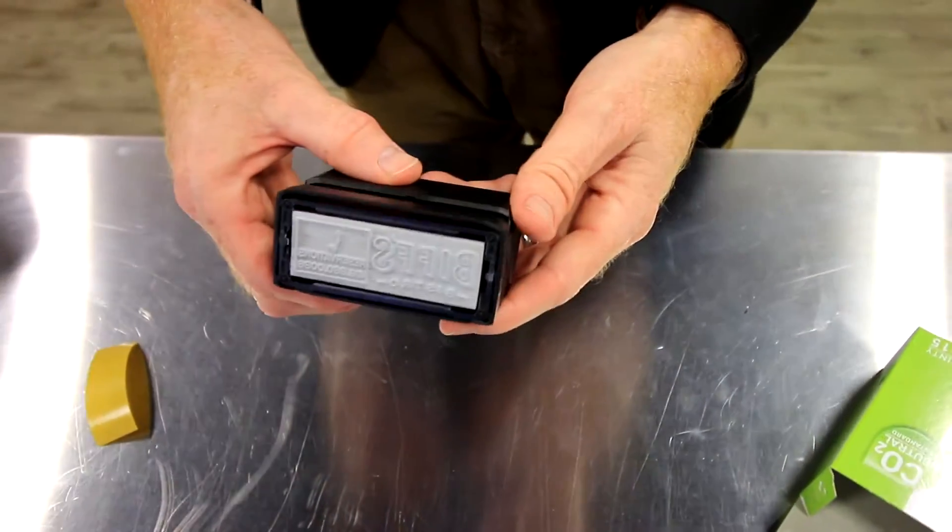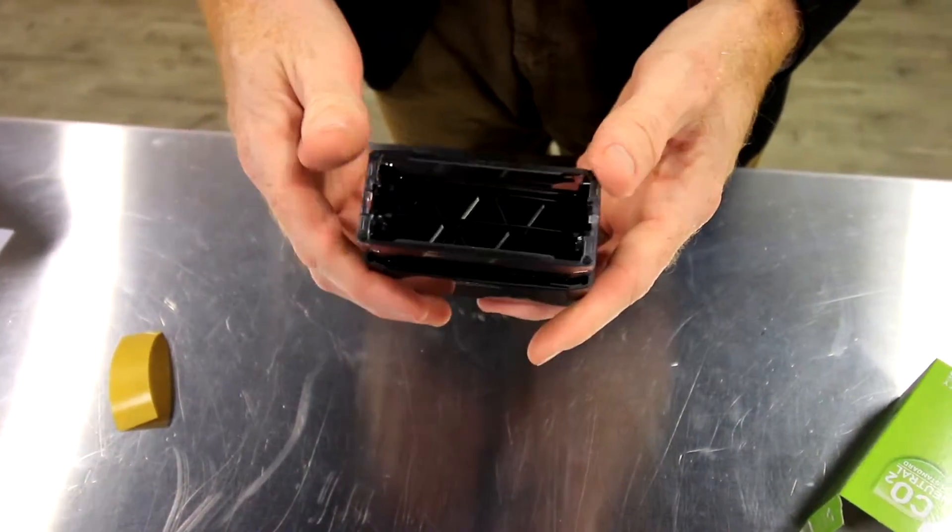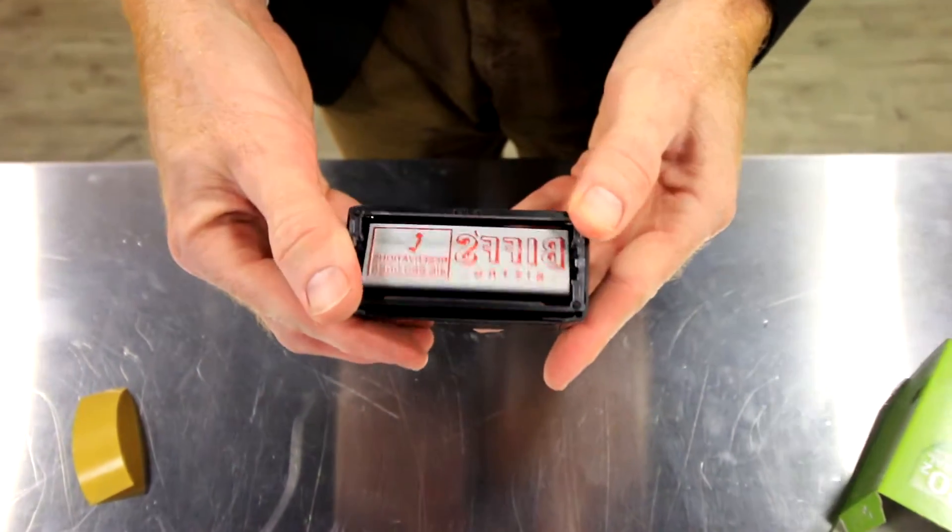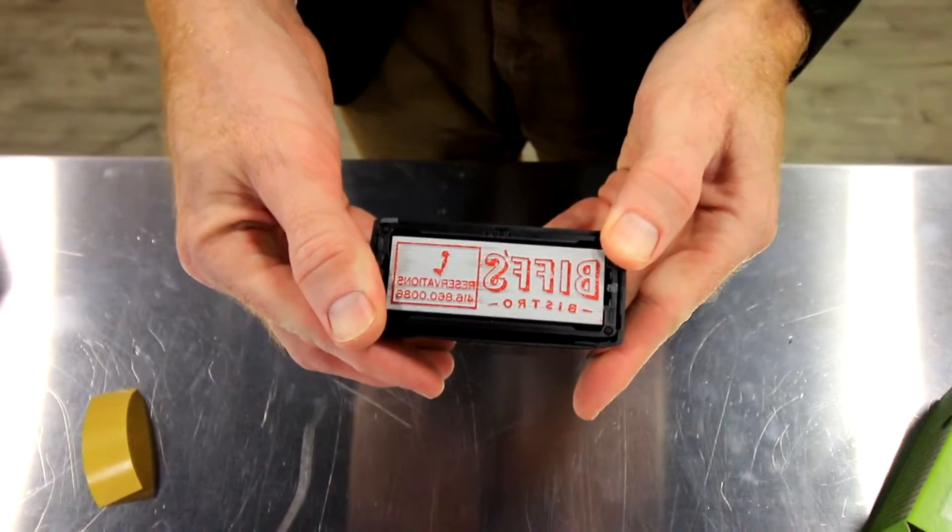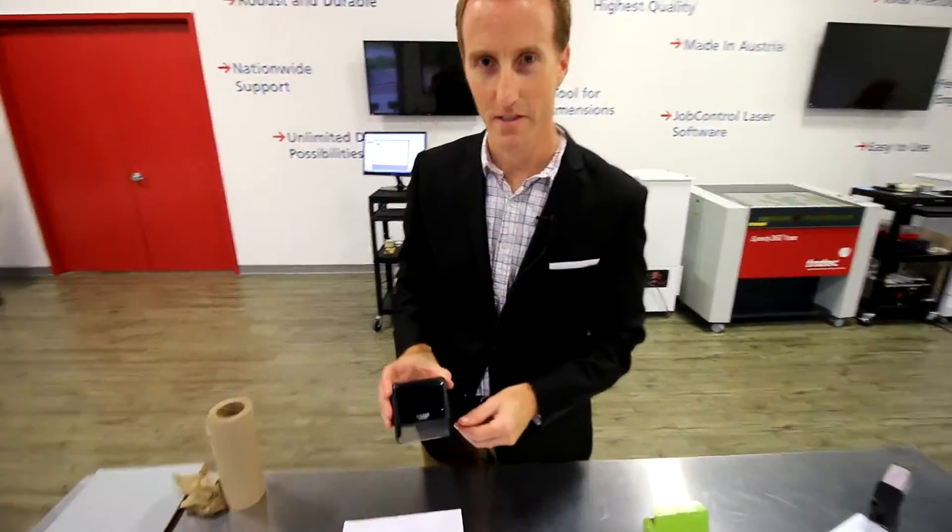Just simply unlock the pad and now the ink will actually be on the stamp. Now that our stamp's produced let's try it out.